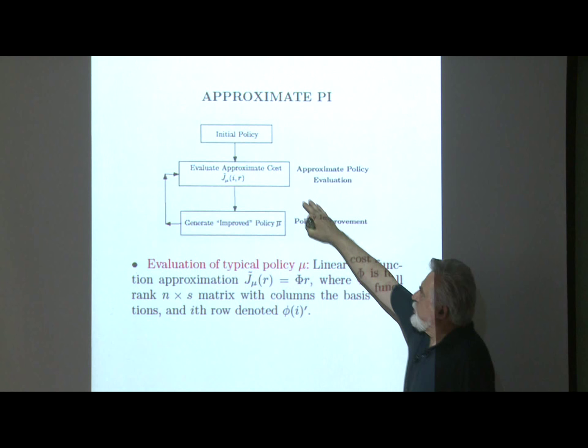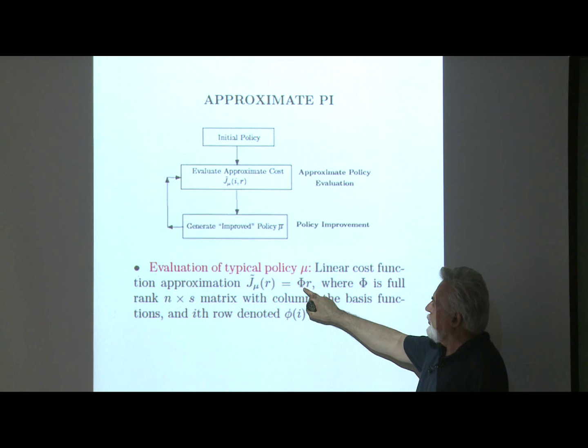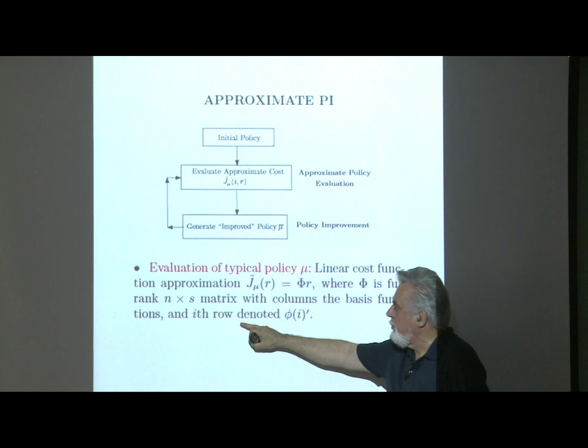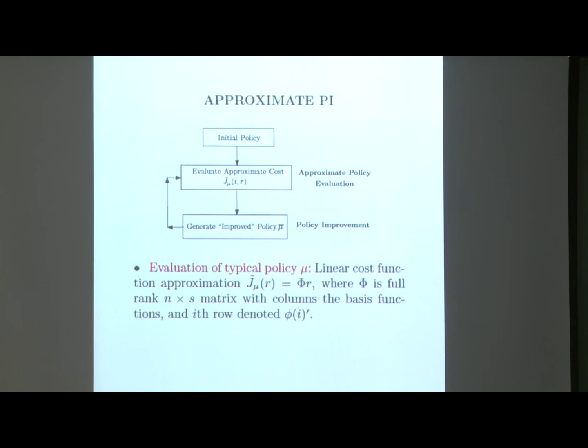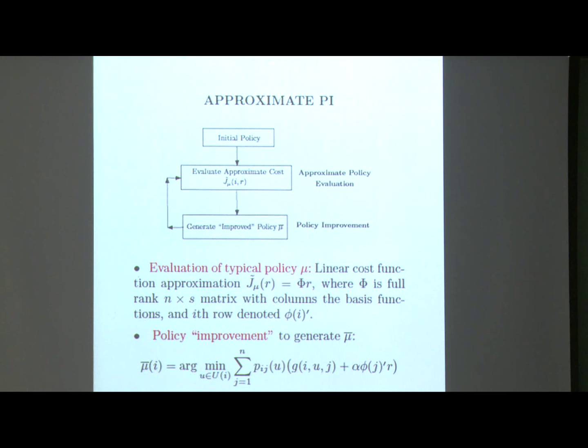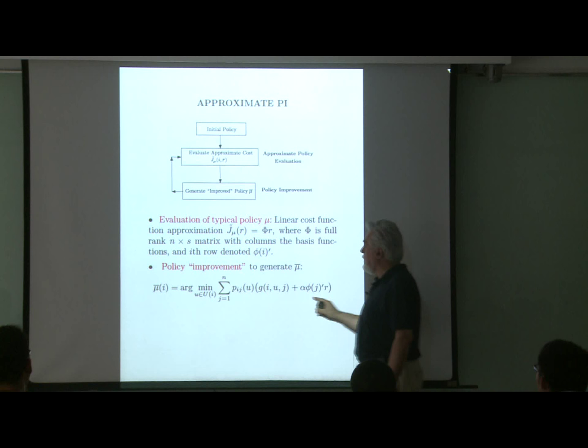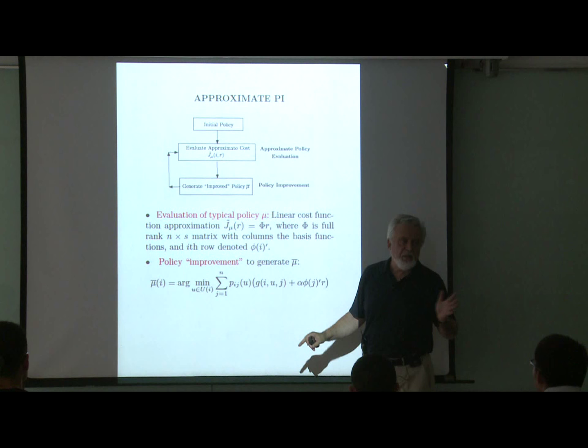To evaluate the typical policy mu, we use a linear cost function approximation involving a matrix of features phi. Phi is a full rank n-by-s matrix with columns which are the basis functions, and the i-th row is denoted by phi sub i prime — the same notation as earlier. Policy improvement, once we have an approximation evaluating the current policy mu, is obtained from the Bellman equation, and I assume that this is done exactly.